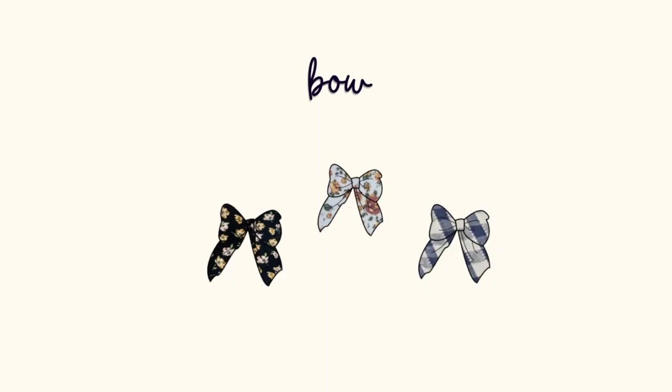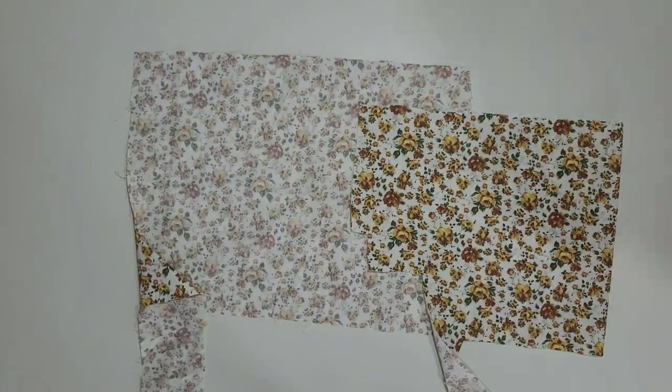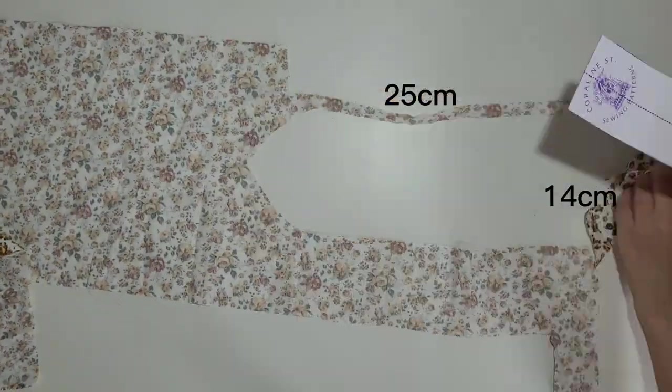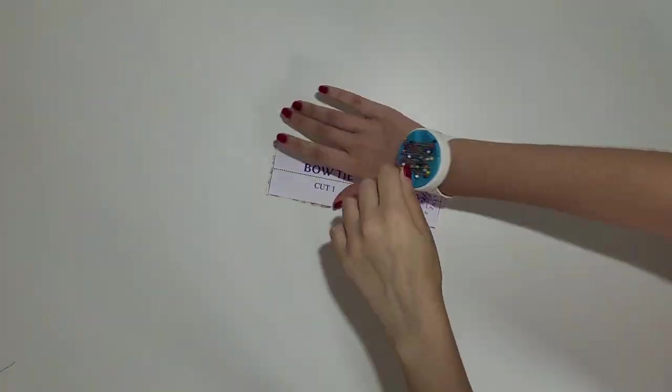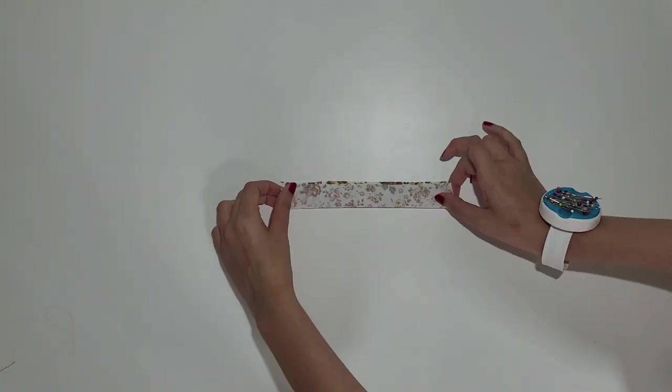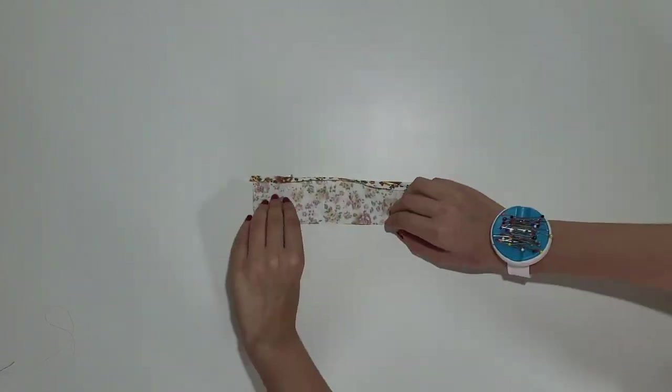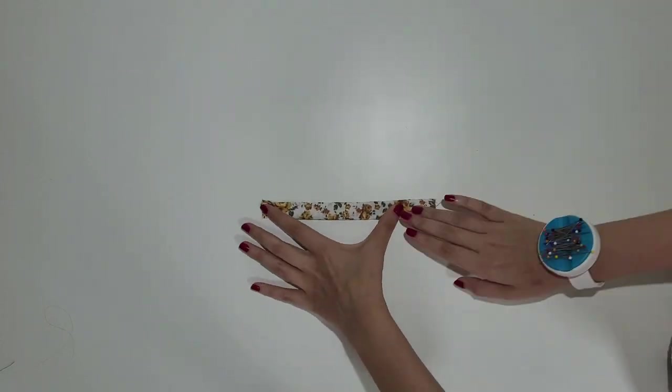Now for the second project. Fold your fabric in half and place the pattern pieces. Cut one bow and one tie. Fold the tie in half and stitch it, or fold the edges inside and then in the middle again and stitch it. It's up to you whether you prefer to do it one way or the other.